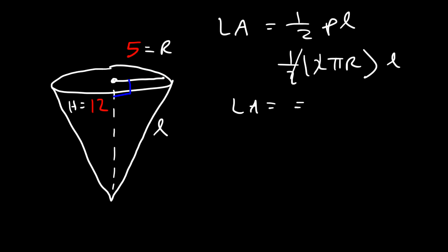The lateral area is 1/2 PL. We have R and we have H, this is the slant height L. And P represents the perimeter of the base which is a circle, so the perimeter of the circle, which is circumference, that's 2πR. So therefore the lateral area is πRL.